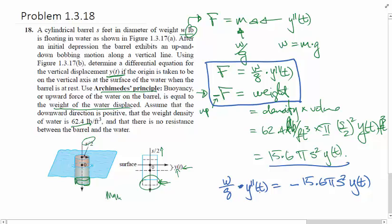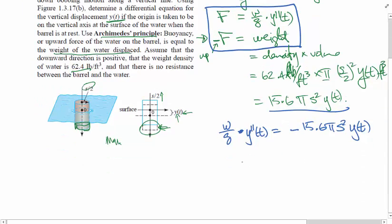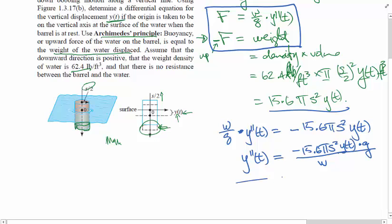And then basically all we want to do is solve for y double prime. Actually, this is already a differential equation, so we can be done. But if you want to write it as y double prime of t is equal to, then that just divides by w and multiplies by g. So negative fifteen point six pi s squared y of t times the gravity over w. So this is your differential equation. I hope that helps.